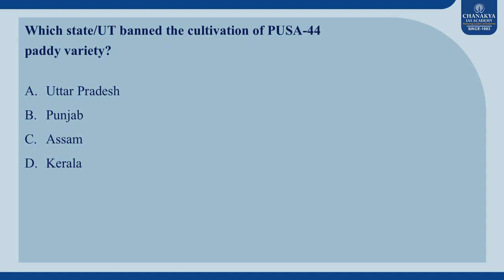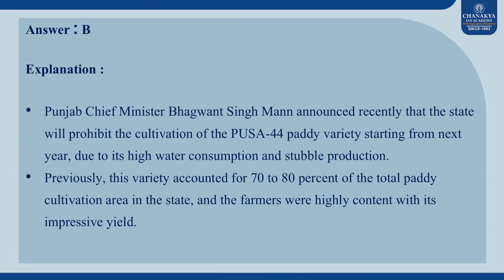Question No. 5: Which state or UT banned the cultivation of Pusa 44 paddy variety? The options are A. Uttar Pradesh, B. Punjab, C. Assam, and D. Kerala. The correct answer is B. Punjab. Punjab Chief Minister Bhagwant Singh Mann announced recently that the state will prohibit the cultivation of the Pusa 44 paddy variety starting from next year due to its high water consumption and stubble production. Previously, this variety accounted for 70–80% of the total paddy cultivation area in the state and farmers were highly content with its impressive yield.